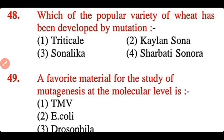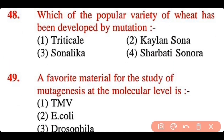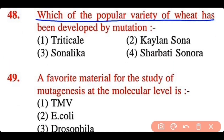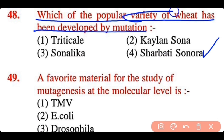Question 48: Which popular variety of wheat has been developed by mutation? Tritical, Kalyansona, or Sherbati Sonara. The correct answer is option 4. Sherbati Sonara is a variety of wheat developed by mutation.